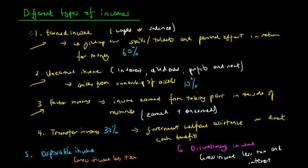And so they're basically the six subcategories or categories of income that we need to know. So first we have earned income, which is when we give up our skills, talents and personal efforts in return for money. Unearned income, which arises from ownership of assets. Factor income, which is both a combination of earned and unearned income, which is earned from taking part in the sale of resources. And lastly, transfer incomes, which are government welfare assistance or direct cash benefits given to the needy by the government. And we also have two subcategories of income, which are disposable and discretionary income. Disposable being gross income less tax and discretionary income being gross income less tax and interest.